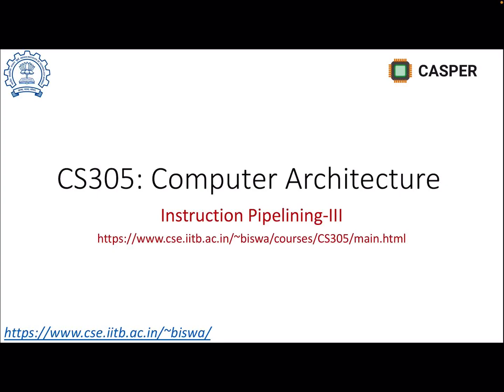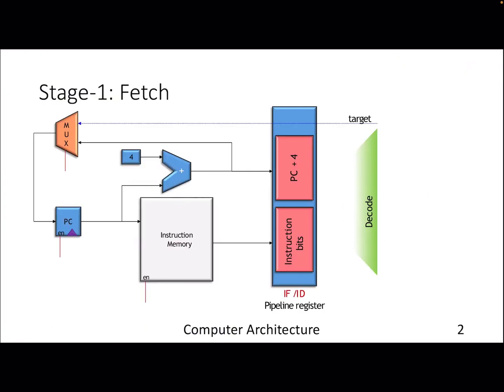In this video we will go a bit deeper into the data path of pipeline design. In the previous lecture we discussed at a high level the data path of different stages like fetch, decode, execute, memory, and write back. In this video we will go into each and every stage in detail and look at each operation more carefully.